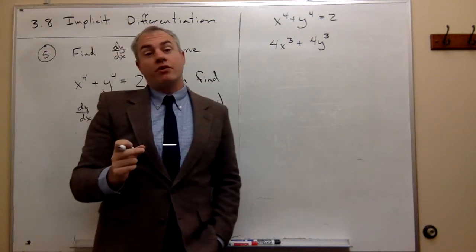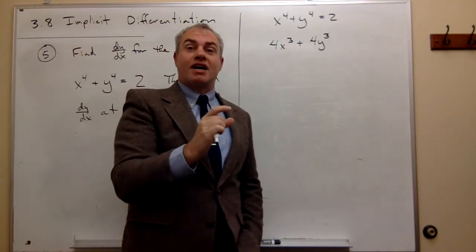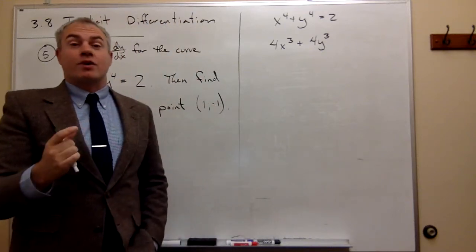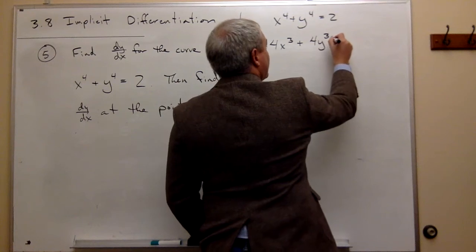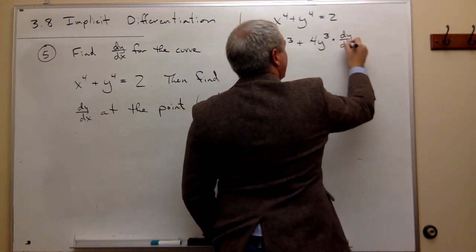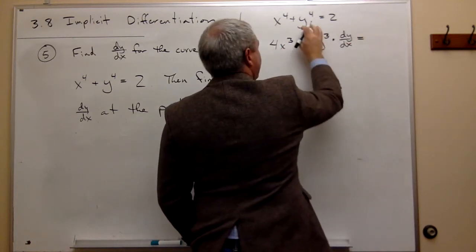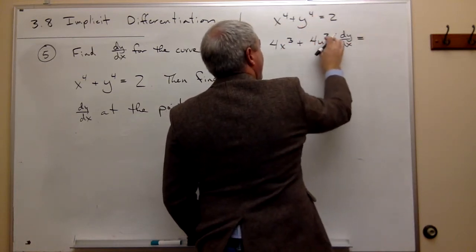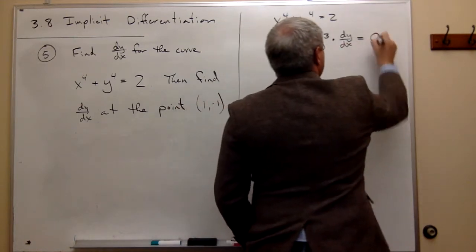But we're not done because the chain rule says we also have to multiply that by the derivative of what's inside. And in this case, what's inside is y. So we need to multiply that by the derivative of y, which is dy/dx. And so this is the derivative of y^4 is 4y^3 dy/dx. And then the derivative of two is zero.